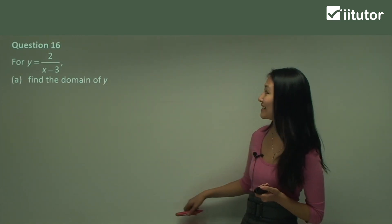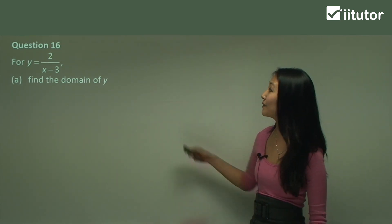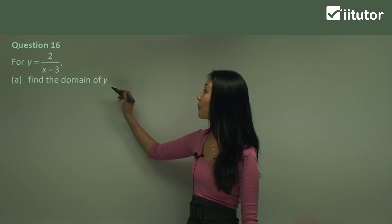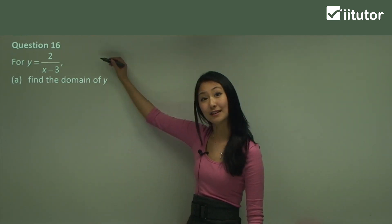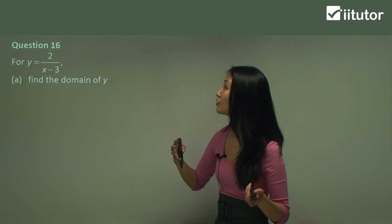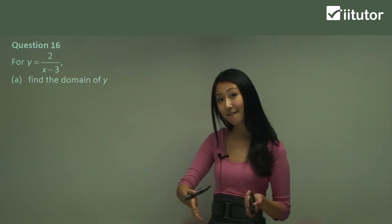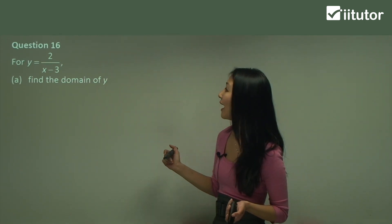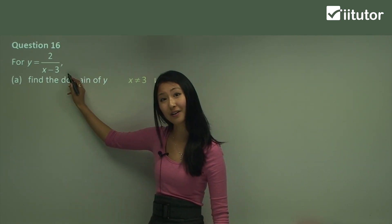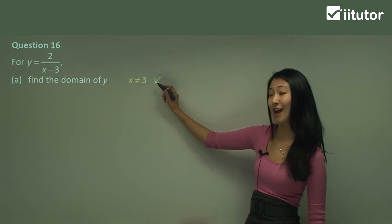All right, let's have a look at question 16 here. So in question 16, we've been given the function y equals 2 on x minus 3. And firstly, we want to find the domain of this original function. So remember, domain is what x can equal. So looking at this, x can equal everything except for, that's right, x can't equal 3, because we can't have 0 as a denominator. So x can be every number except x cannot equal 3.